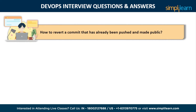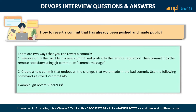The next question is: what is the process for reverting a commit that has already been pushed and made public? There are two ways to revert a commit. First, remove or fix the bad file in a new commit and push it to the remote repository, then commit it using the appropriate command. Second, create a new commit that undoes all the changes made in the bad commit, using the git revert command.